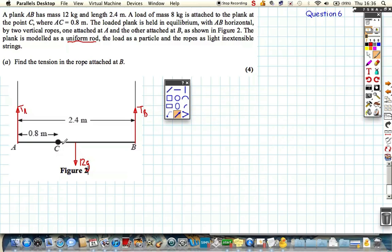We've also got this particle C which acts straight down at that point, 0.8 metres away from A. It's 8 kilograms, so the weight is 8g acting down. Now before I start anything, I think that's all the information we need to add to our diagram.